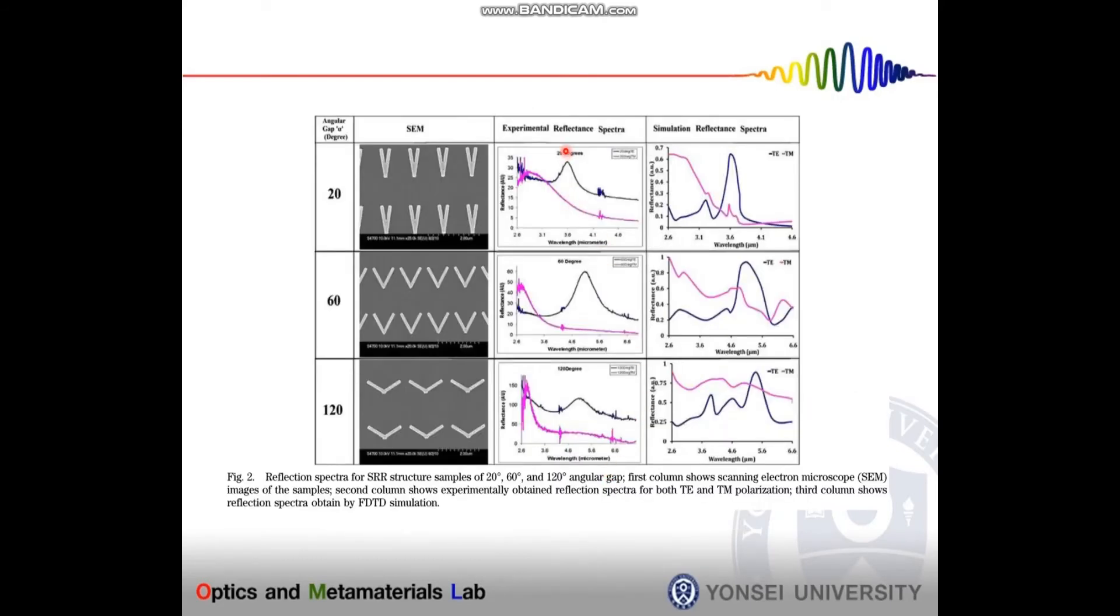This is the experimental reflection spectra and this is the simulated reflection spectra. For the simulation, we use the FDTD method. Here, the experimental and the simulated data are similar under the laboratory limit.